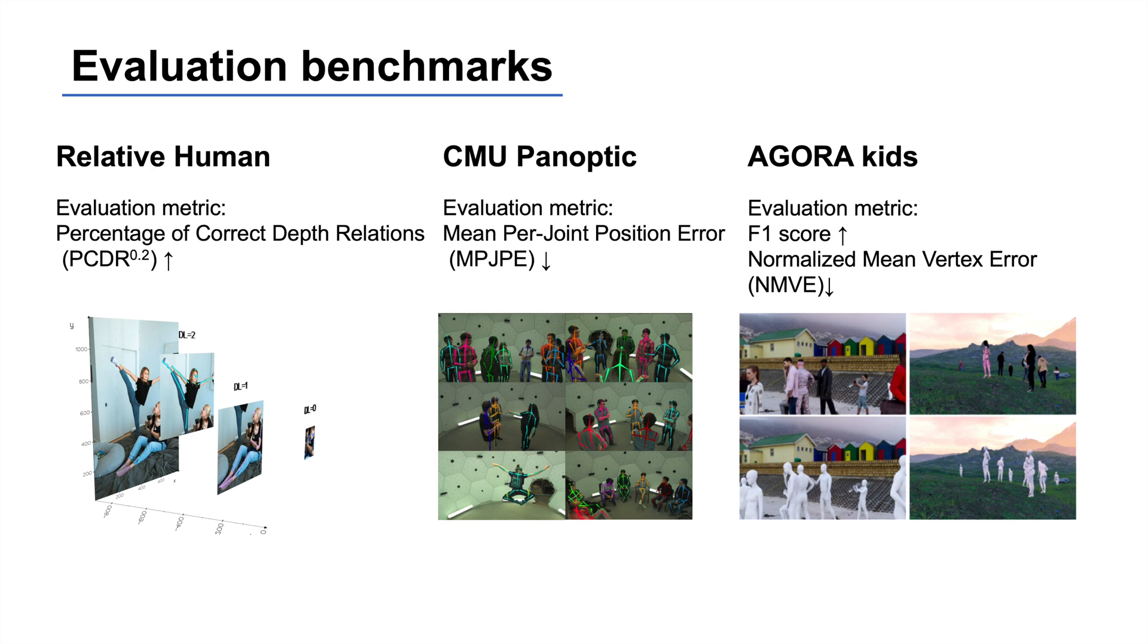On AGORA, we report the detection metric, or F1 score. We also report normalized mean vertex error, or NMVE, between the ground truth 3D body mesh and the estimated one, which is normalized by F1 score.